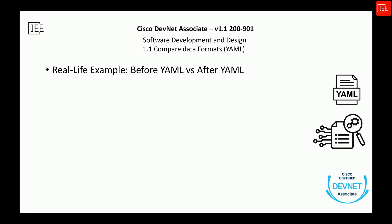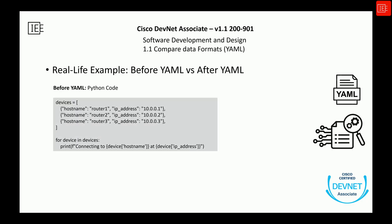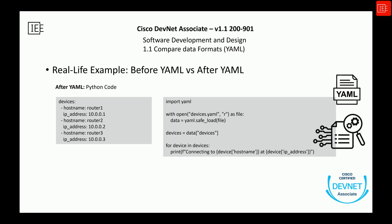Let's pause for a moment and imagine you are writing a Python script to connect to a few network devices. Without YAML, things can quickly get messy. Before knowing about YAML, you might hard-code your devices directly inside the Python script. It works, but it's messy if you have a lot of devices. If you need to add or remove devices, you have to change your Python code each time, which isn't ideal, especially if you are handing this script to someone else.